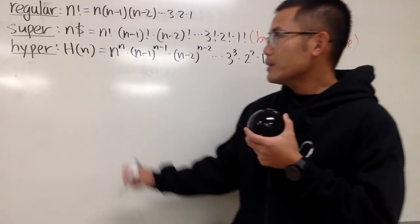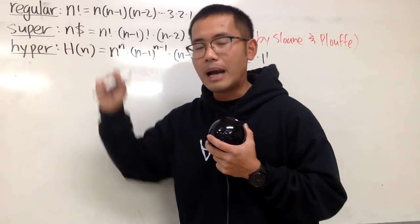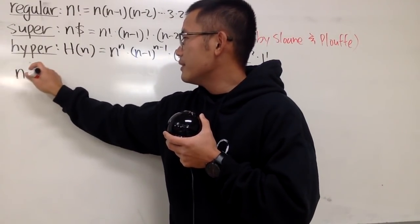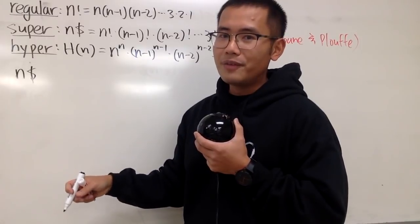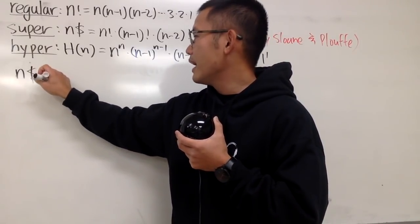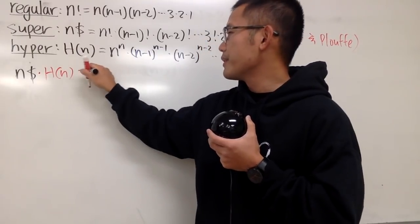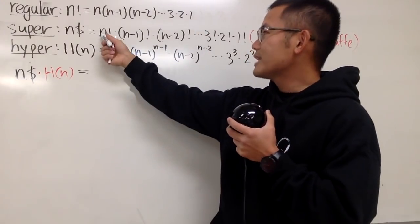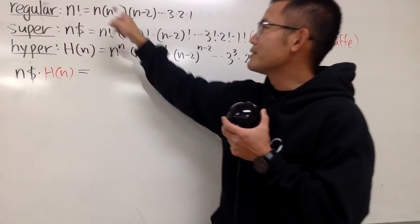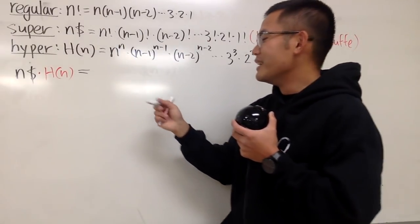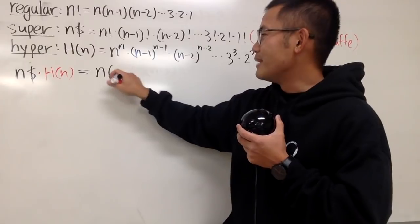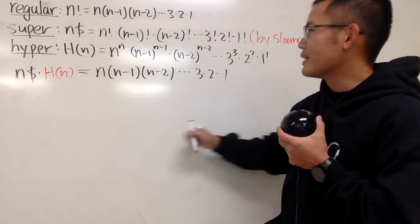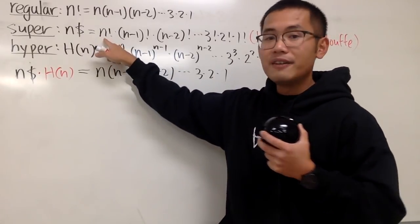Now, what if we multiply the super factorial and the hyperfactorial together? Let me start with n dollar sign for the super factorial, and then multiply by h of n, the hyperfactorial. For the super factorial, notice how we have n factorial right here. We expand it as n times n minus 1 times n minus 2 times dot dot dot times 3 times 2 times 1. So this is the first n factorial.